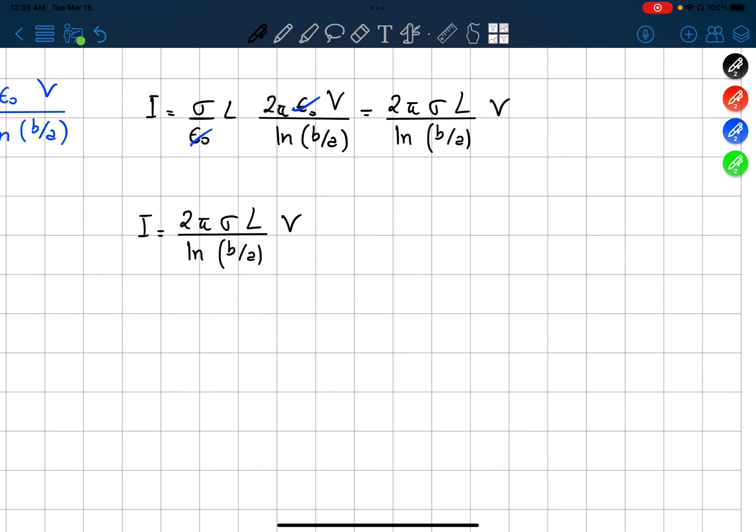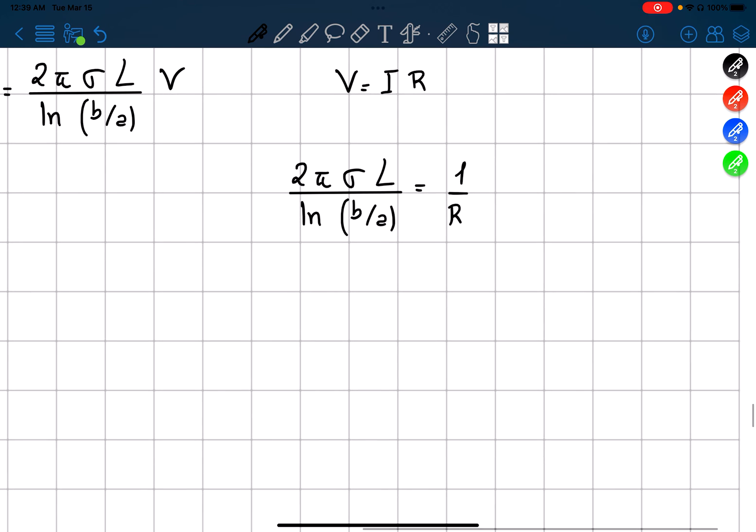Or if we use Ohm's law, we know that V is equal to IR. So this means that this part over here is equal to 1 over R. Or R is equal to, minus one, so this part on top and this part on the bottom.